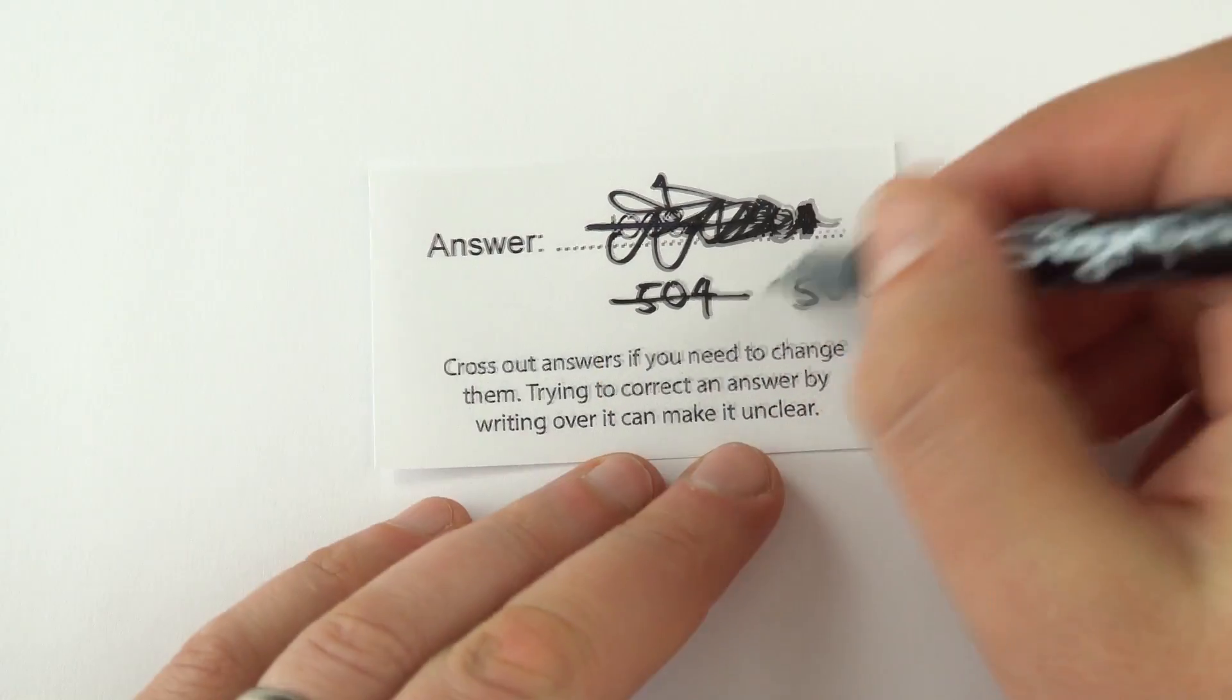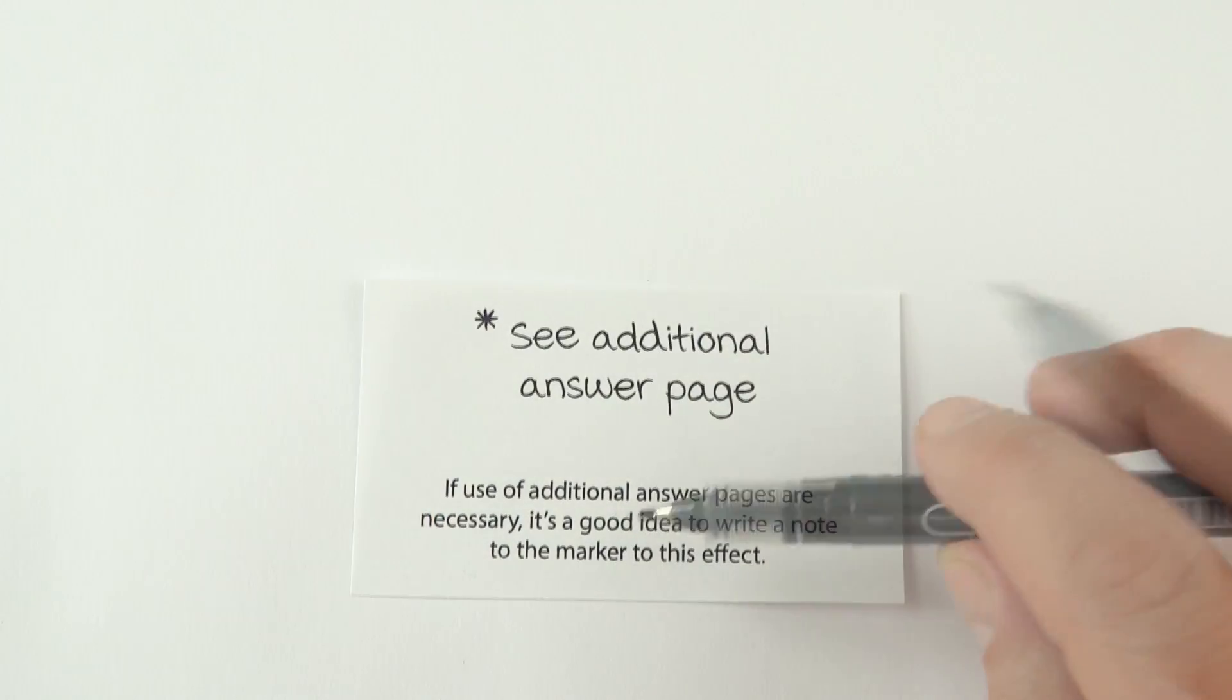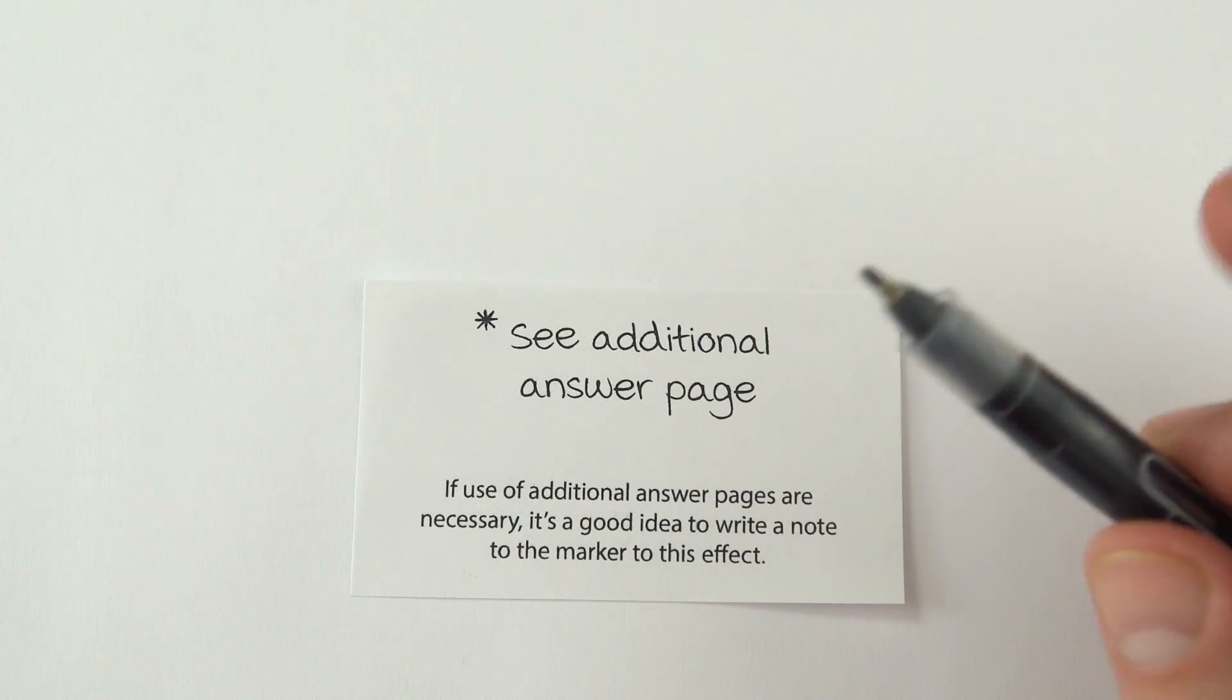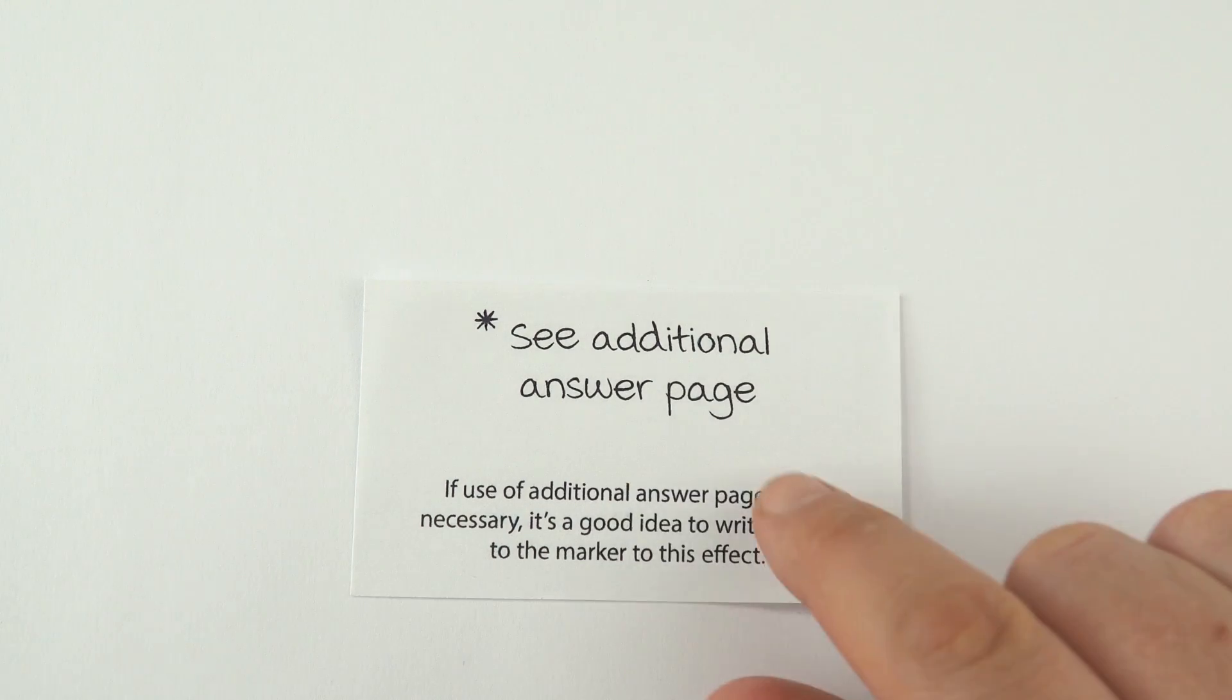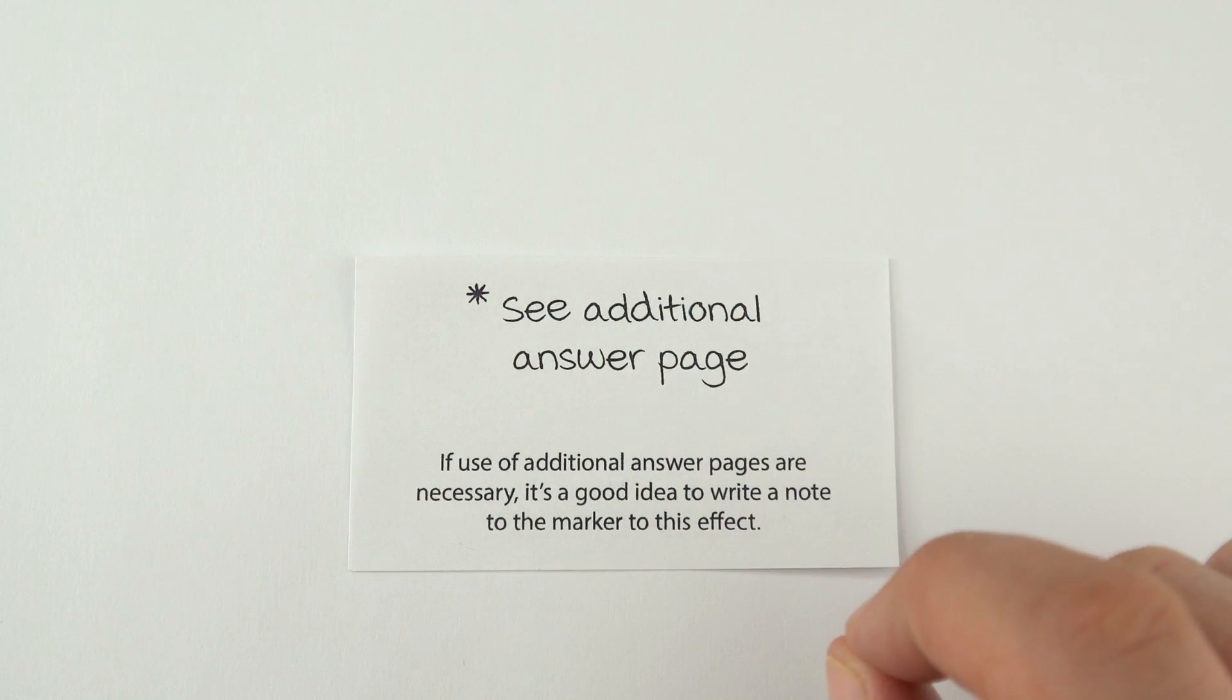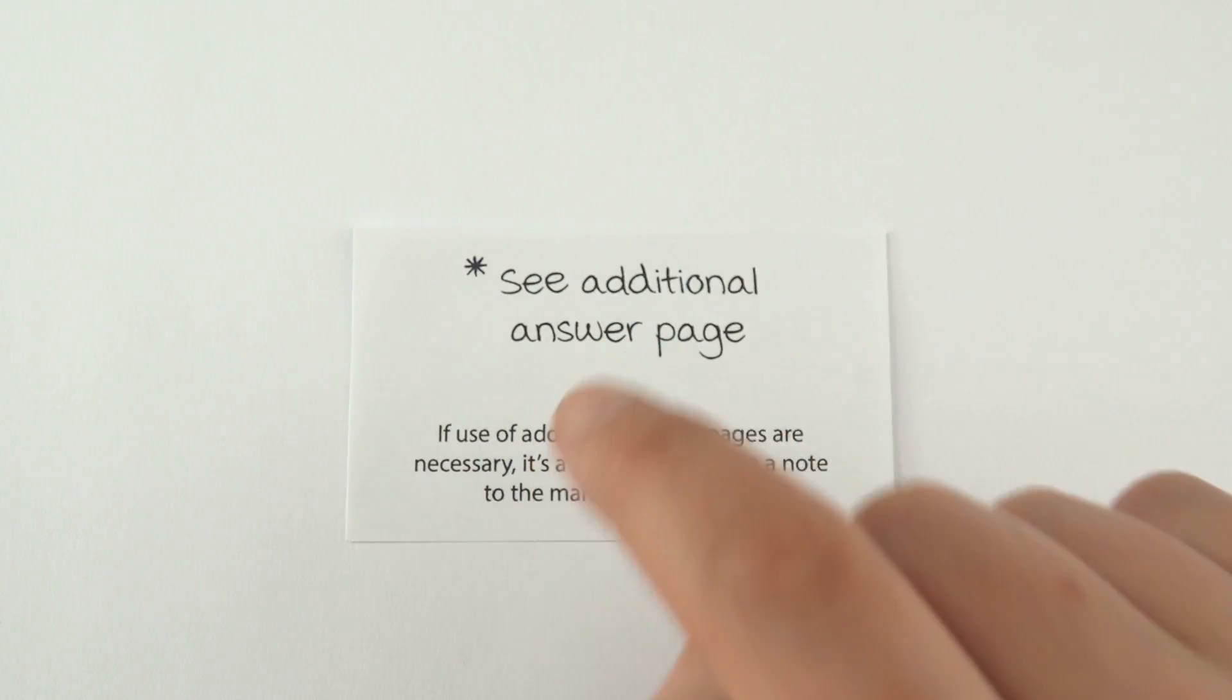If you don't have any more space, because there's nothing left on the page, then put a note saying, see additional answer page. You can use these. Sometimes you make mistakes, you have to cross it all out, start again, that's fine. You will get credit for anything you do on the answer pages, but make it clear to the person marking your work. They're going to be marking hundreds and hundreds of similar things. They're not going to give you the benefit of the doubt by trying to find the right thing. If you can help them by saying, see additional answer page, then you've got more chance of scoring the marks that you deserve.